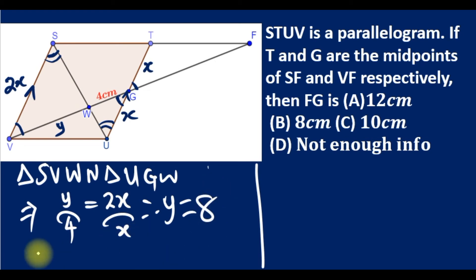We can see that VG is now y plus 4. VG is the addition of these segments, so we have 8 plus 4 which is 12.